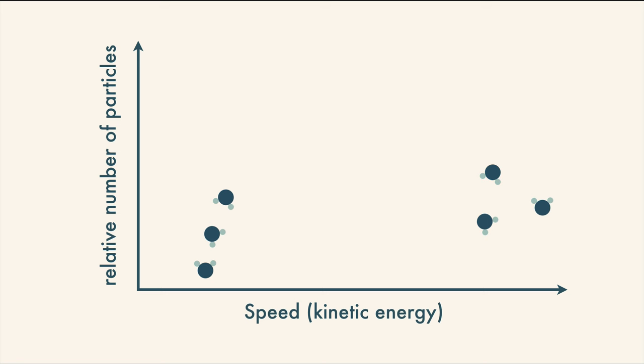But we can't easily take a snapshot of just one or a few particles. When we measure the temperature, we're looking at the average kinetic energy of many particles. This bell curve may represent a fairly warm temperature.